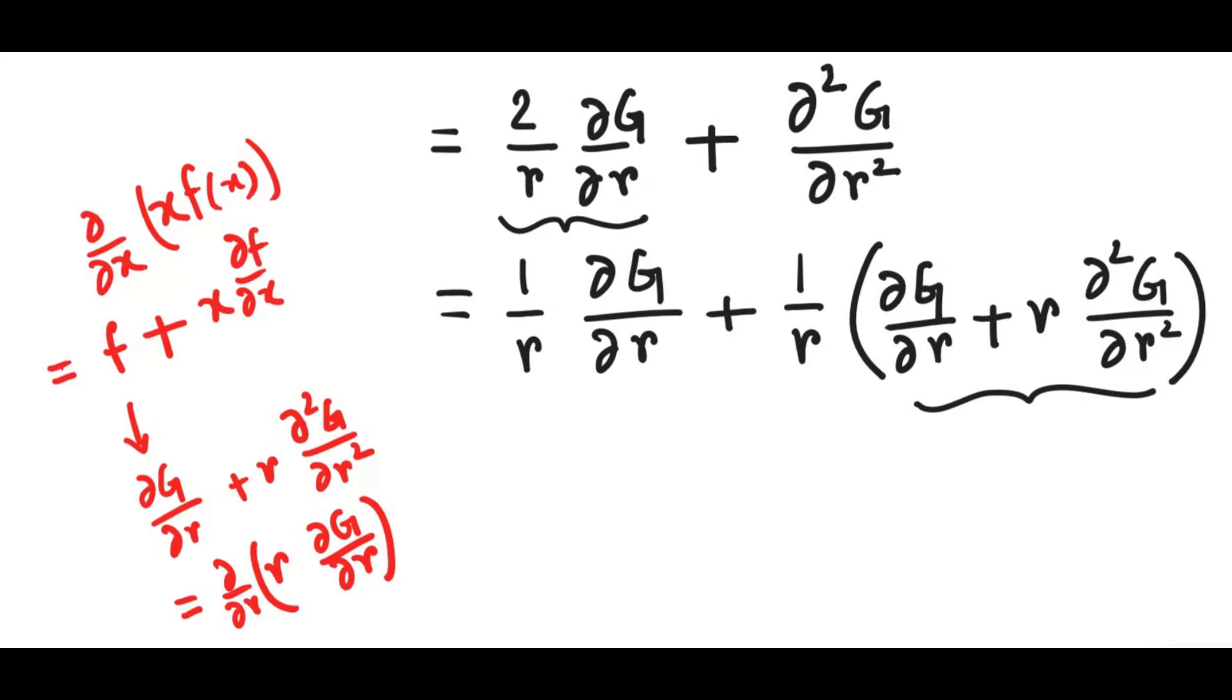So therefore, we get 1 over R and then this plus 1 over R, and then the derivative derivative, and then R times the derivative. All right, so that's our first step.